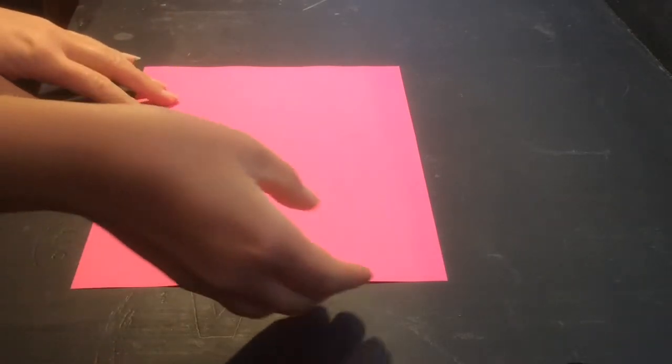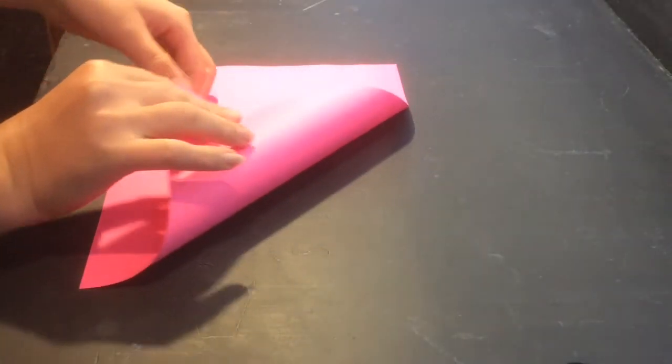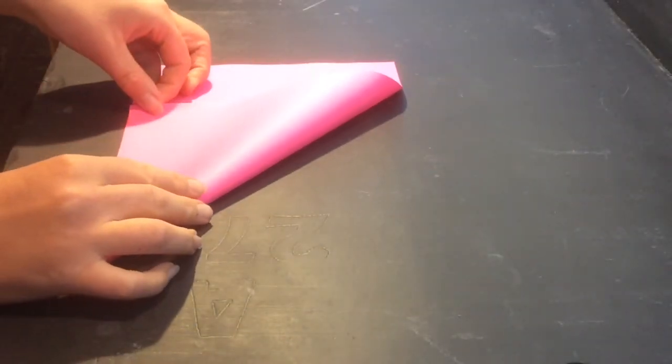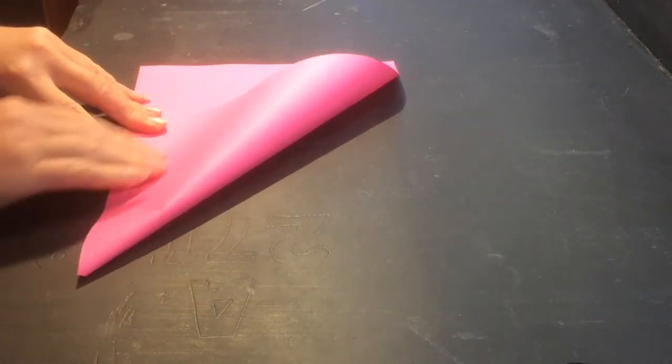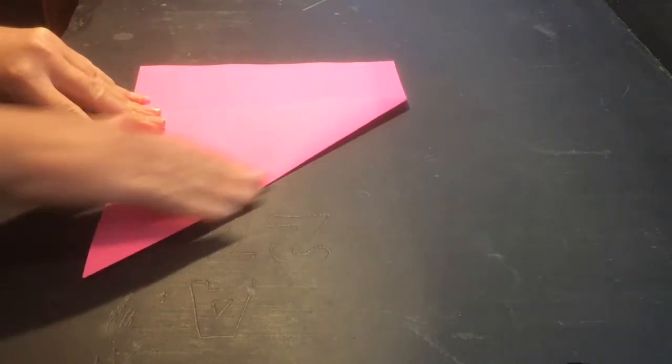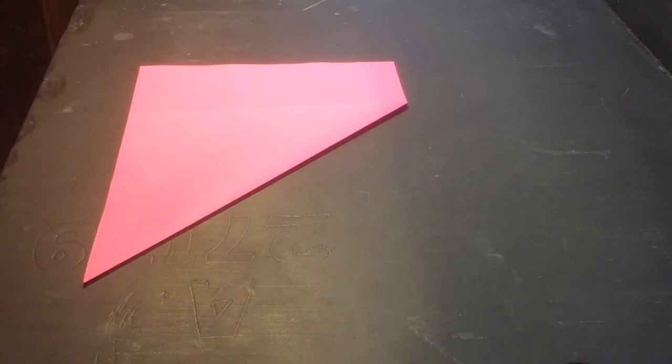Okay, so we've got our nice pink sheet of paper here. What we're going to do is take the top corner and bring it down to the bottom edge and we're just going to line it up nicely. Fold it in down the center there.